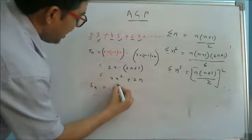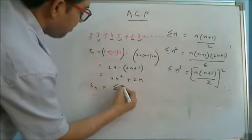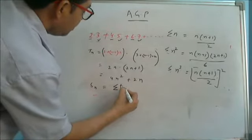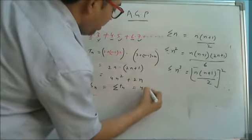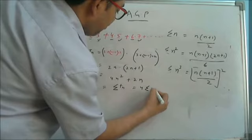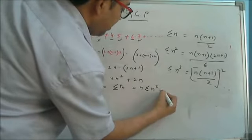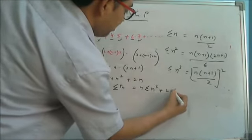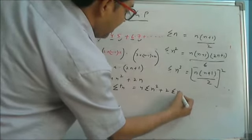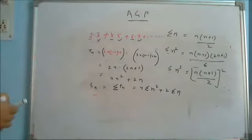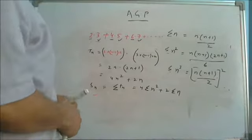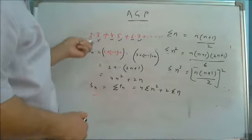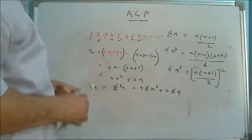So Sₙ is summation of Tₙ, which is 4 × summation of n² + 2 × summation of n. And we can just put in the values and get the sum of this particular series.